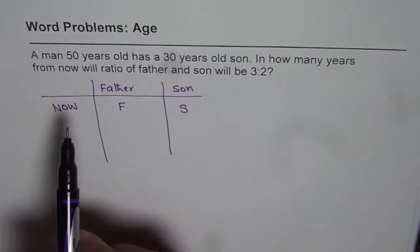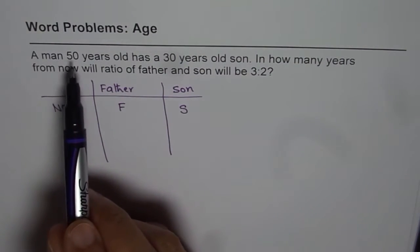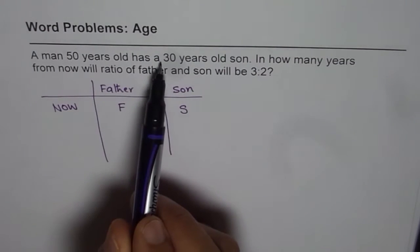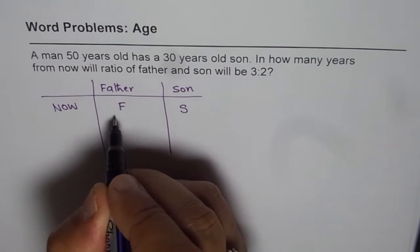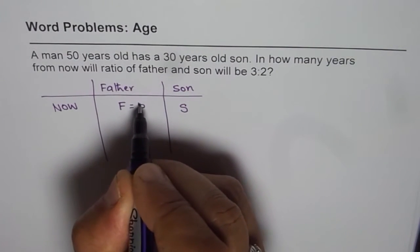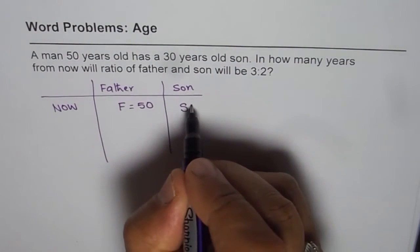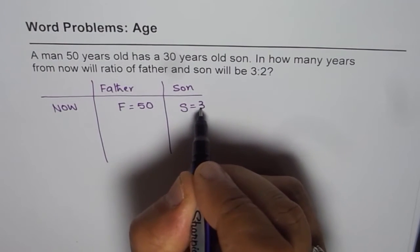Let us read the question. A man 50 years old has a 30-year-old son. So the present age for father is 50 and son's age is 30.